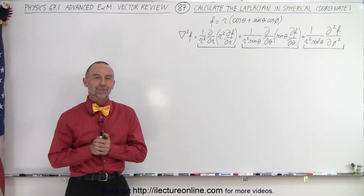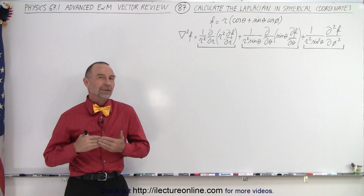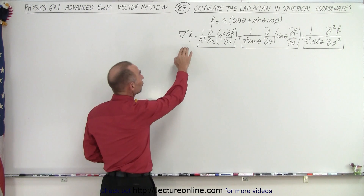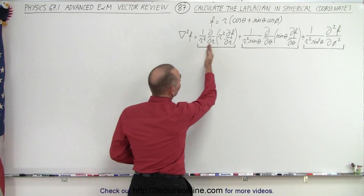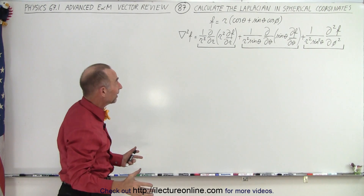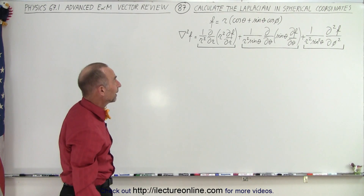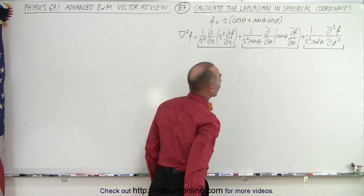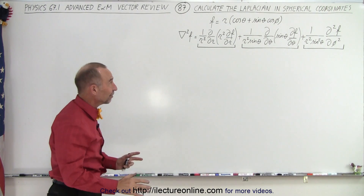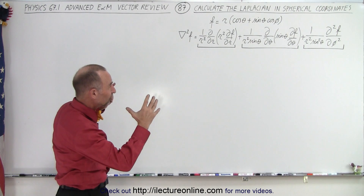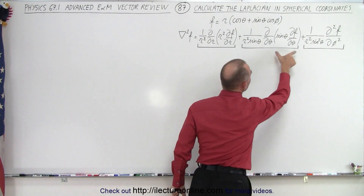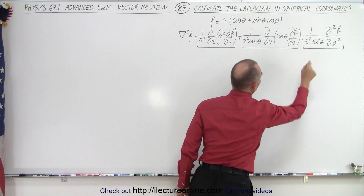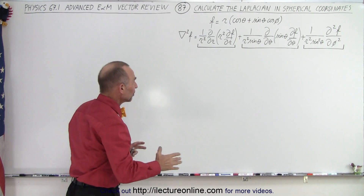Welcome to our lecture online. In this video we're going to show you how to take the Laplacian of a scalar function in spherical coordinates. Here's the equation — the Laplacian of a function equals this. It looks quite messy, but here we have the function defined as r times the quantity cosine of theta plus sine theta cosine phi. It's not that difficult if we do it one step at a time. I like to divide it into three parts: the first related to r, the second related to theta, and the third related to phi.